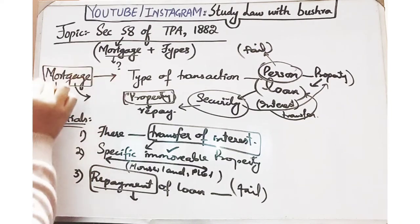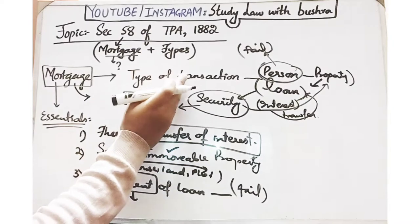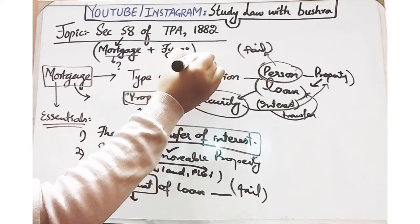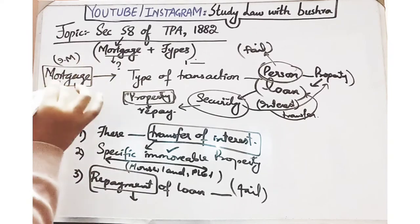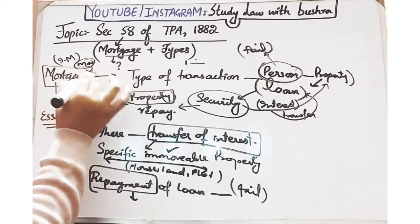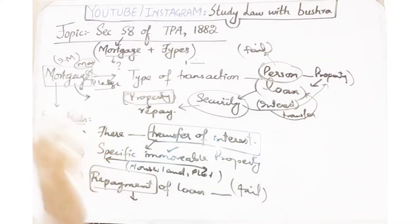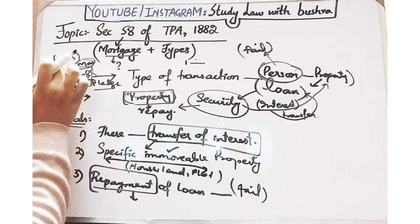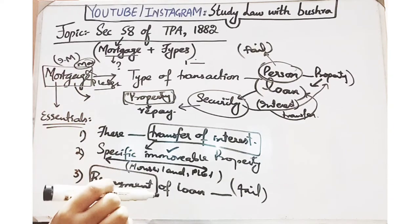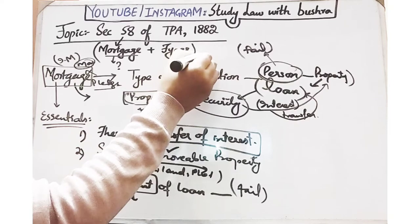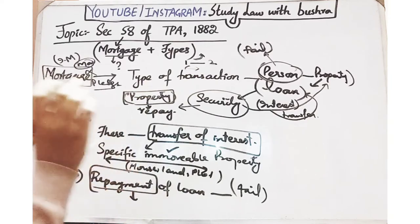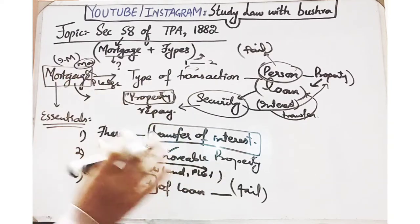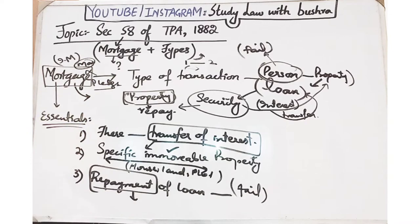Simply, agar hum mortgage ko dekhein to mortgage kya hai — ek aisi transaction jis mein ek bhanda kisi dusare bhande ko apni property transfer karta hai. Mortgage ke liye yaad rakhna hai ke hamesha aap apni immovable property kisi dusare bhande ko dete ho as security of your loan, ke in case of non-repayment of the loan, woh dusra bhanda aap ki is property se apna woh loan secure kar sake.